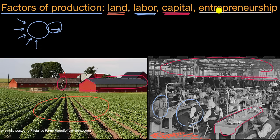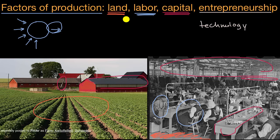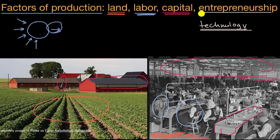A related idea, sometimes used interchangeably in an economics course, is technology. Sometimes you'll see the four factors of production listed as land, labor, capital, and entrepreneurship, and sometimes as land, labor, capital, and technology. But when you see technology as a factor of production, don't think of it as technology in everyday language — like computer chips or software. When people talk about technology as a factor of production, they are really talking about entrepreneurship: the know-how of putting together the other factors of production in order to produce that output.